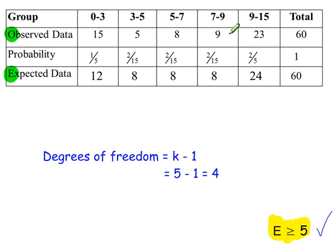Doing something similar with the other classes, working out the missing values. We have 5 classes, so 4 degrees of freedom. All of the E values are at least 5.